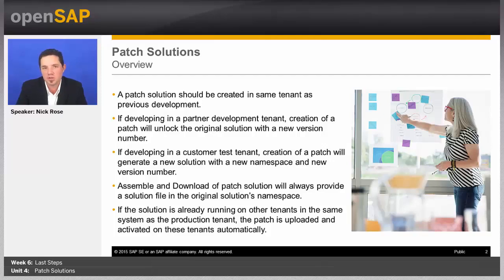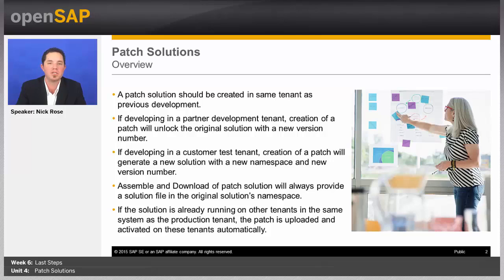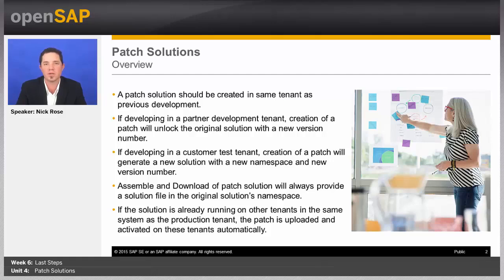If you're working in a partner development tenant and you go to create a patch solution, it's just going to take the same solution, unlock it, create a new version, and you can continue development there. Then you would follow the process of deploying it again to the customer's test tenant or production tenant. If you're working in a customer test tenant, you'll see something a little bit different — it will actually create a copy of the original solution, a second solution, and it'll be in version three and open for development. This copying only happens once; from then, the new patch solution will always just be updated with new version numbers.